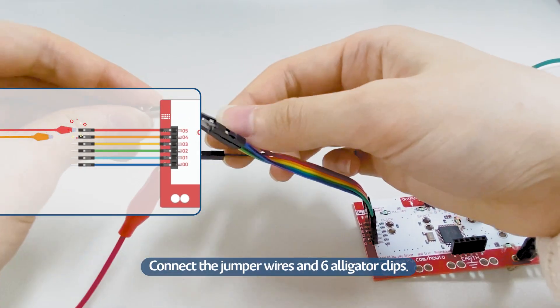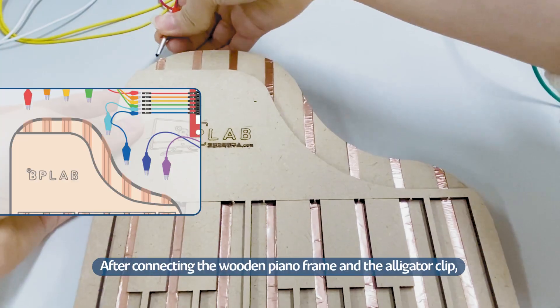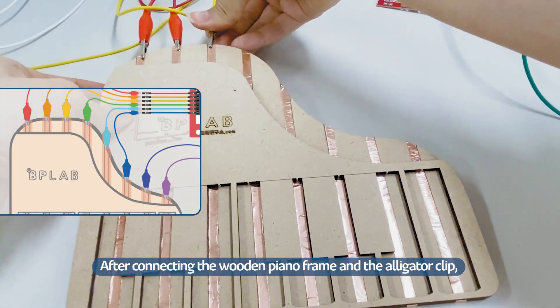Connect the jumper wires and 6 alligator clips. After connecting the wooden piano frame and the alligator clip, the electronic piano is complete.